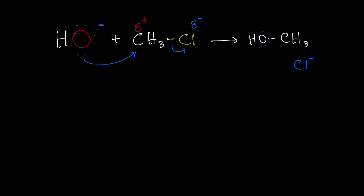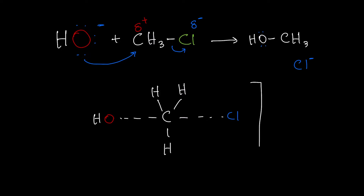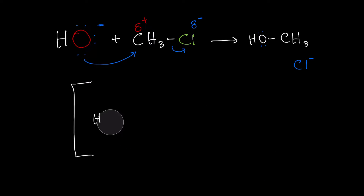Now if you want to draw the transition state for this reaction, you'd have the carbon with the three hydrogens. What's being attached to the carbon is the OH that's coming in, and what's leaving is the chlorine. Put little brackets around that, and that's how you draw the transition state. This all happens in one step in the SN2 reaction.